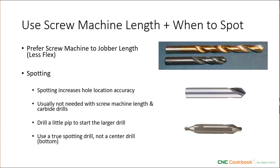Before I dive in, I want to mention something many beginners aren't familiar with: the difference between screw machine and jobber length twist drills. Most people, in home workshops especially, are used to jobber length twist drills. But for most CNC work, screw machine length is preferable because the shorter bits have a lot less flex to them. So if you're starting out, you might want to get a set of screw machine length bits. Another topic of general interest is spot drilling — that's where you drill a small pip that you're going to start the larger drill in. When you use a screw machine length drill, it's shorter, more rigid, less flex, so it's going to be more accurate, and for most applications you won't need to bother spotting.